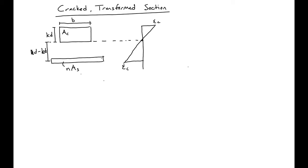So what we'll do is we'll take our KD times B, the area above, times KD over 2, and set it equal to N times A_s, the area below, times D minus KD.